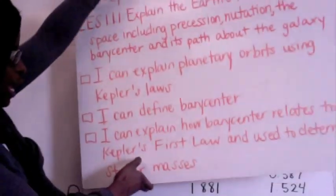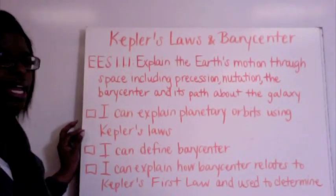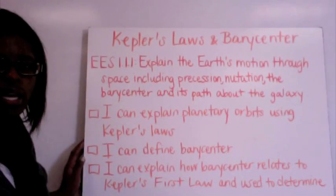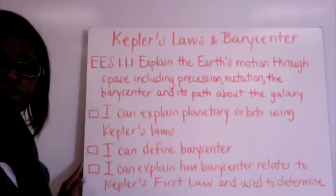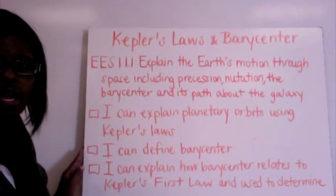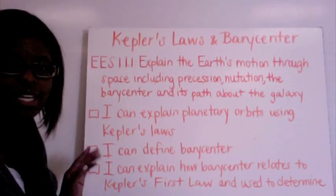So we're going to go back to our original slide. Can we now explain the planetary orbits using Kepler's Law? You should be able to define barycenter and you should be able to explain how the barycenter relates to Kepler's Law and how we can use the barycenter to determine stellar masses. Good luck.